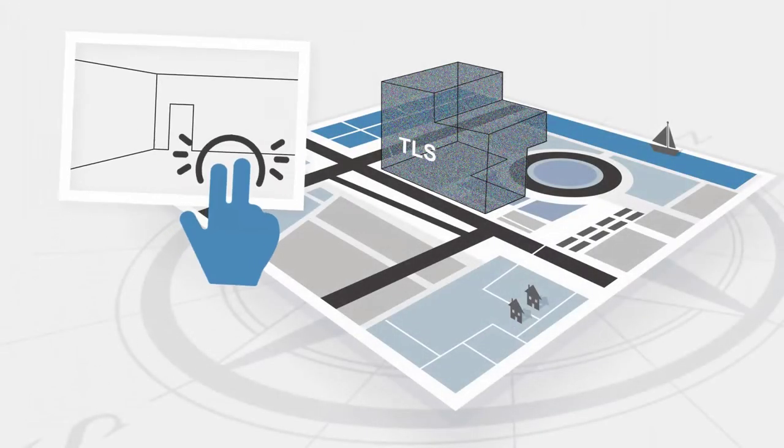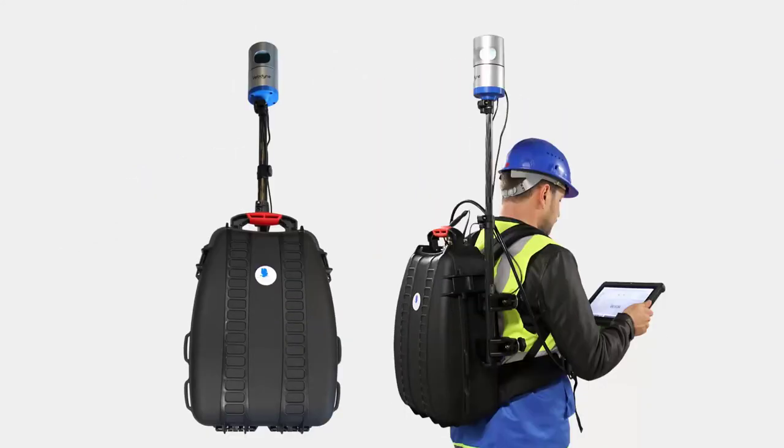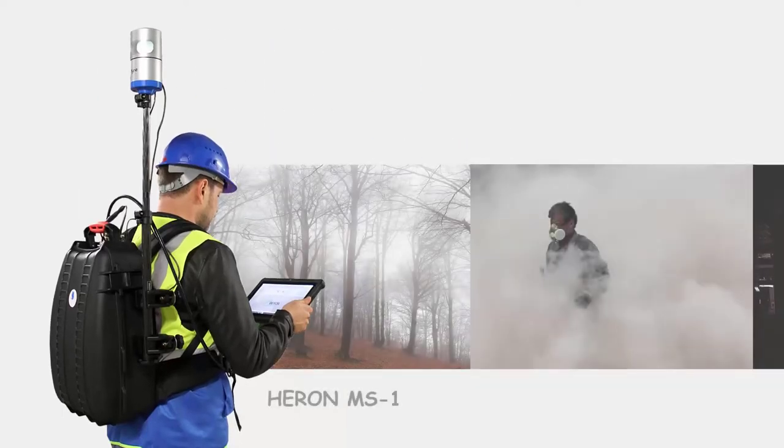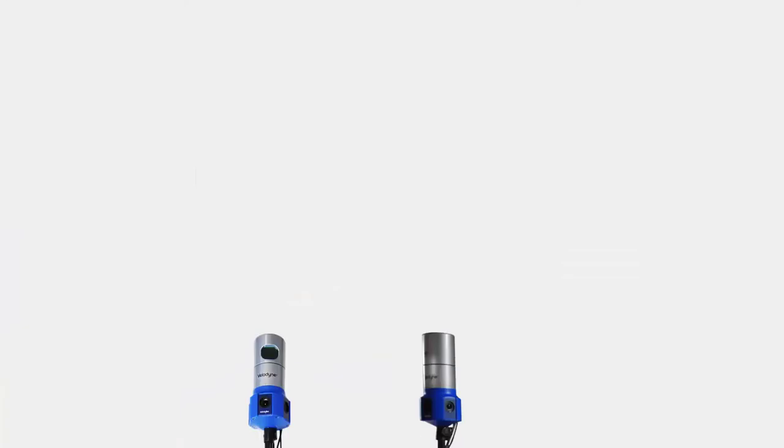Third, move the Heron model onto georeferenced TLS point clouds. Fourth, Heron is available in a rugged version to survey in humid, dusty, or difficult conditions.